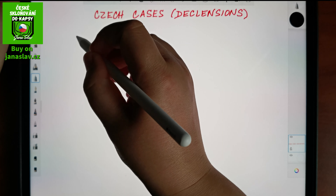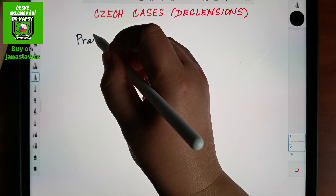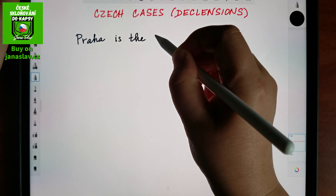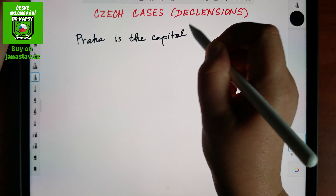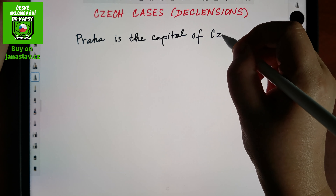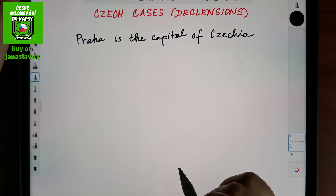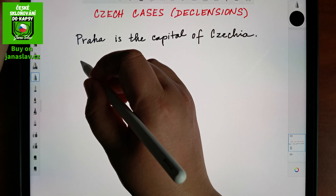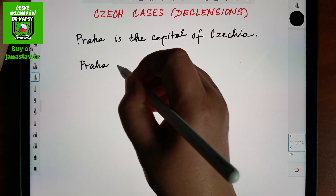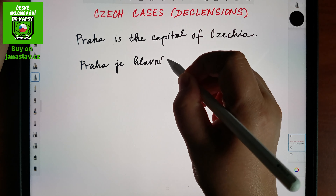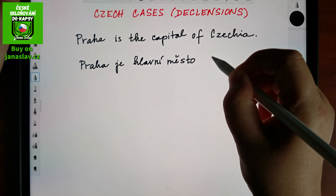So let's say that Praha — Prague — is the capital of Czechia. In Czech I would say: Praha je hlavní město Česka.